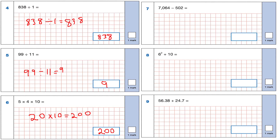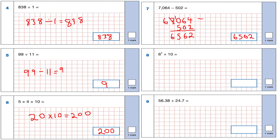Question 7: 7,064 subtract 502. Make sure the numbers are in the correct place value. 4 take away 2 is 2; 6 take away nothing is 6; 0 take away 5 — I can't do that, so I borrow from the thousands column to get a 6 and a 10; 10 take away 5 is 5; bringing the 6 down. The answer is 6,562.